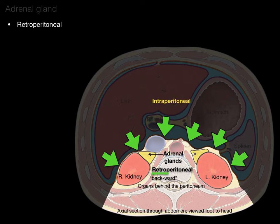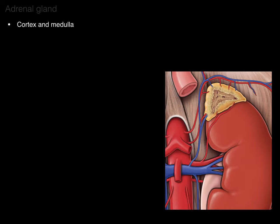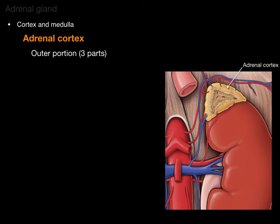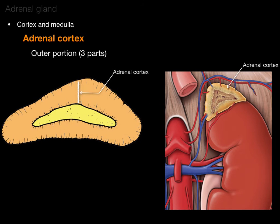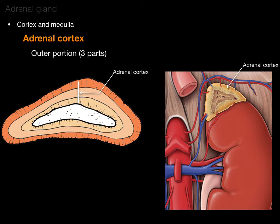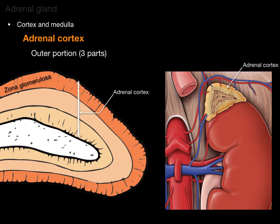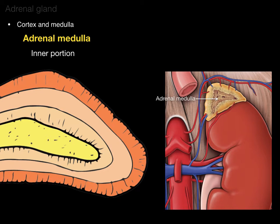The adrenal gland has a cortex and a medulla. The adrenal cortex is the outer portion, and it has three parts: the zona glomerulosa, zona fasciculata, and zona reticularis. The inner portion is called the adrenal medulla.